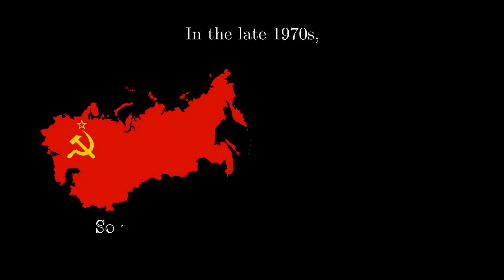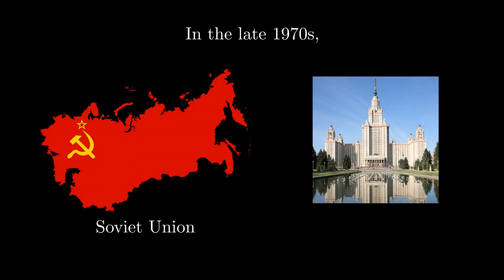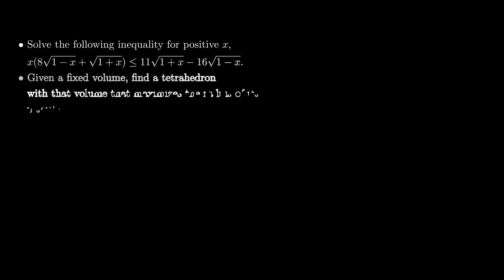In the late 1970s in the Soviet Union, the mathematics department at Soviet universities, namely Moscow State University, which is considered the most prestigious mathematics school in Russia, was actively trying to keep Jewish students and other undesirables from enrolling. One way they used was to give students a different set of problems during their oral exam.